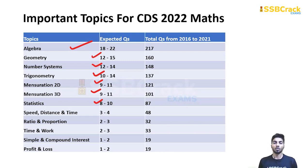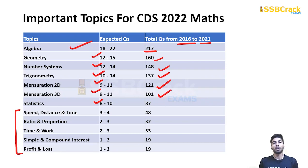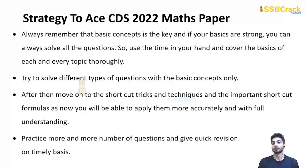If you have extra time after revision, you can look at the basic formulas of the remaining topics as well. Looking at the total questions from 2016 to 2021: Algebra had 217 questions, followed by 160, 148, 137, 121, and 101 from the other topics. There is a large number of questions coming from these seven topics — that's why I suggest covering only these seven, as 80% of the paper comes from them. If you have time, you can review main formulas of the other topics.